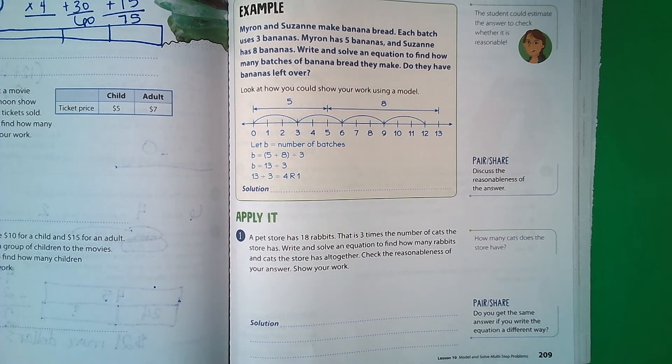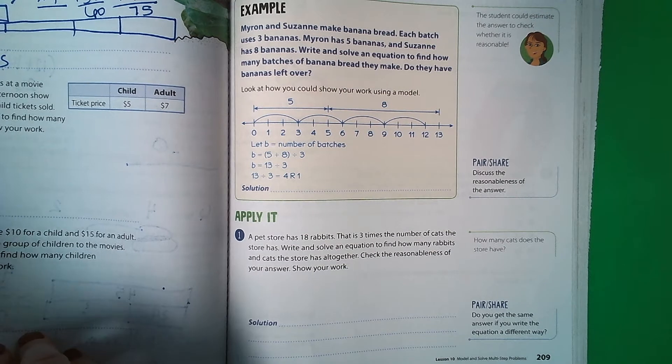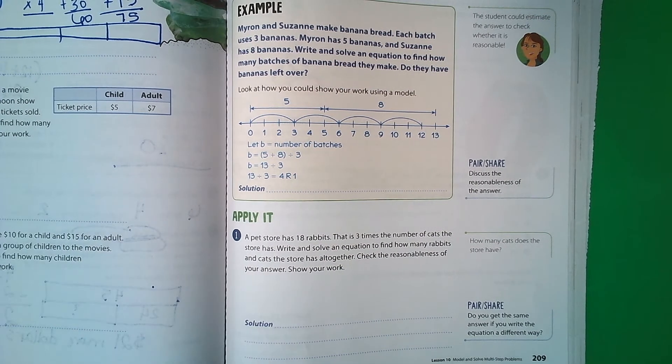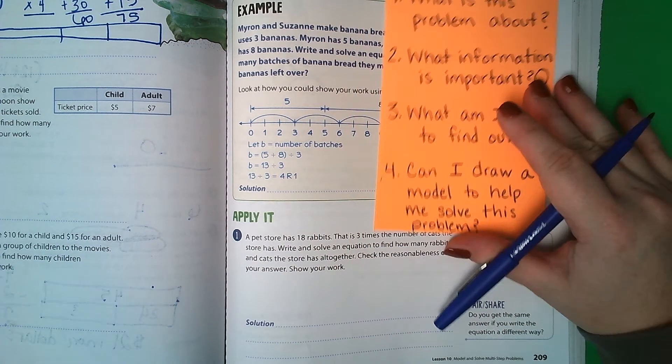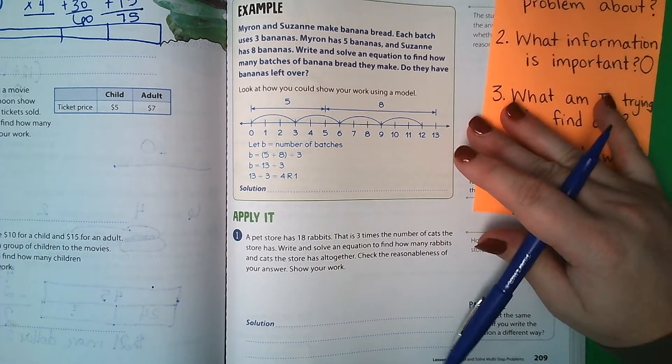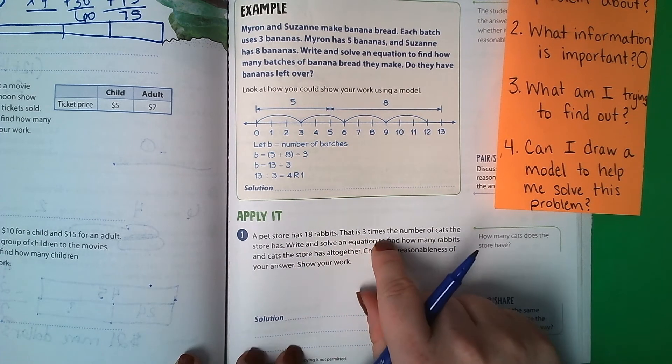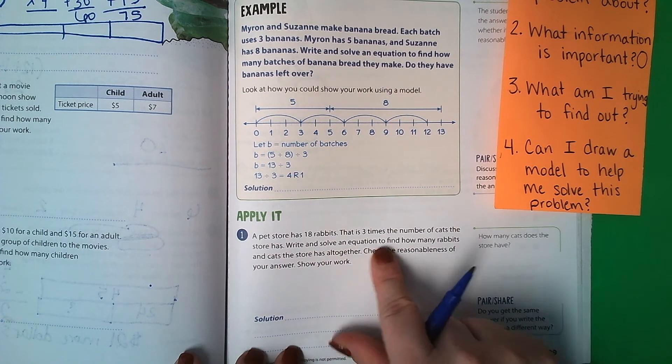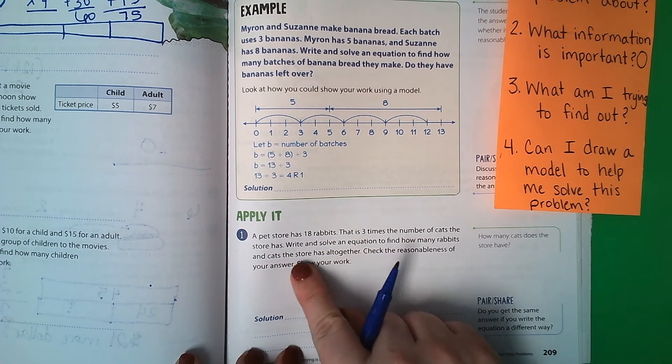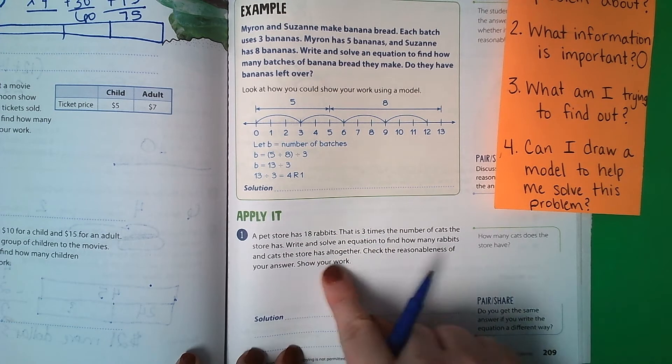Alright students, if you are still watching this, then that means that you have pages 209 to 212 finished in your math book. You need a pencil and paper and your word problem card. A pet store has 18 rabbits. That is three times the number of cats the store has. Write and solve an equation to find how many rabbits and cats the store has altogether. Check the reasonableness of your answer. Show your work.